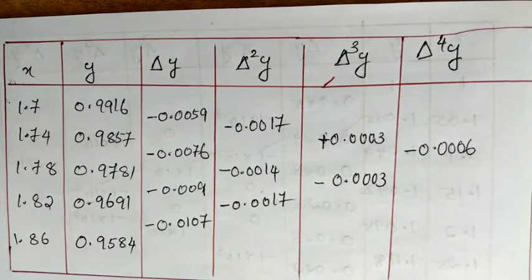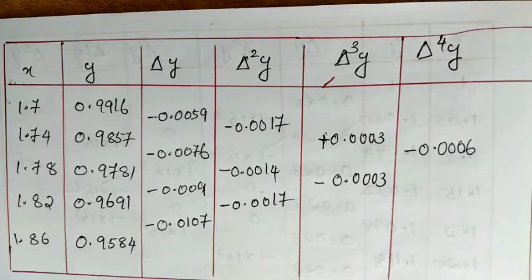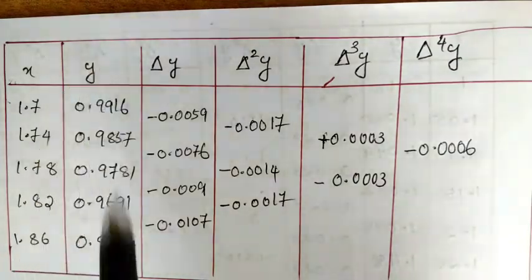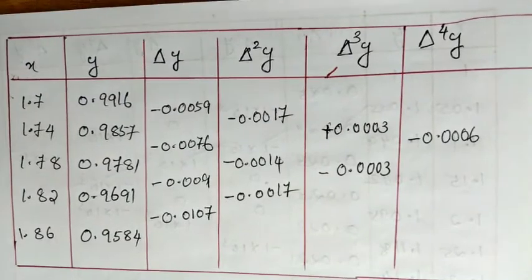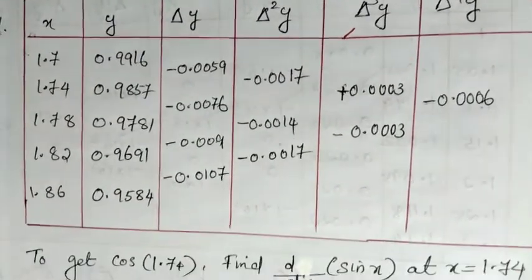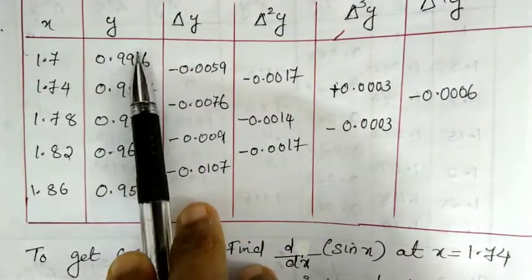Solution: first, construct the difference table with columns x, y, delta y, delta square y, delta cube y, and delta raise to 4y. The x values start from 1.70. Then compute delta y as the difference between consecutive y values, that is y1 minus y0, y2 minus y1, and so on.